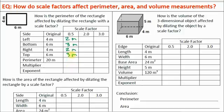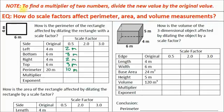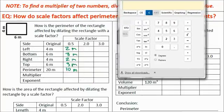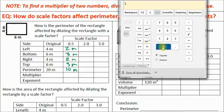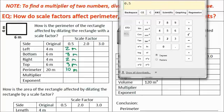The next question asks you to fill out what the multiplier is. I want you to understand mathematically what a multiplier is. We're asking: how do we get from 20, our original perimeter, to 10? To find a multiplier between two numbers, divide the new value by the original value. So we take the new perimeter of 10 and divide it by the original perimeter of 20. Our multiplier is 0.5.